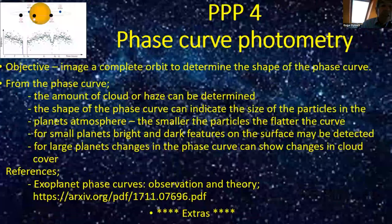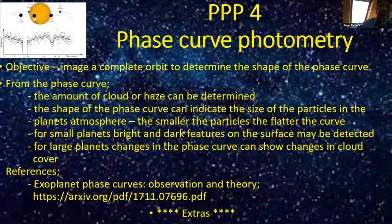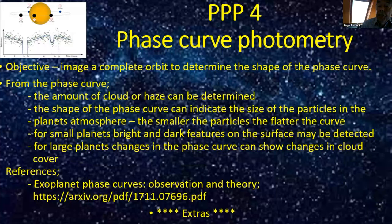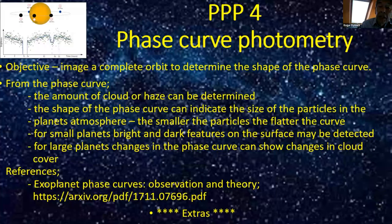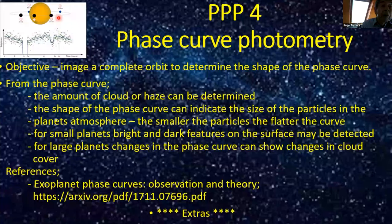The objective of this project is to image a complete orbit of an exoplanet to determine the shape of its phase curve — a project which lends itself to group activity, whereby observations can be coordinated and amalgamated. The measured brightness varies depending on the relative positions of the planet and the host star. Maximum brightness occurs when a planet is about to move behind or emerge from the host star, as we're seeing both the light from the star and reflected light from the planet — equivalent to a full moon — and that's the brightest part of the curve.